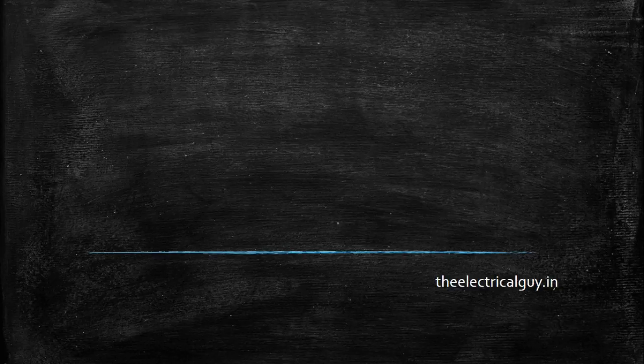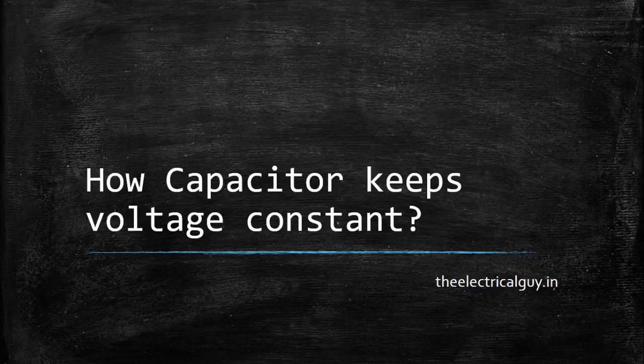We know that a capacitor is used to keep the voltage constant. Capacitors are used in voltage regulators and voltage stabilizers. But have you ever thought about how a capacitor helps to keep the voltage constant, and why you always get a leading current in a capacitor? If you want the answers, watch this video.